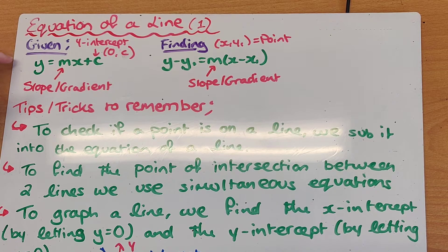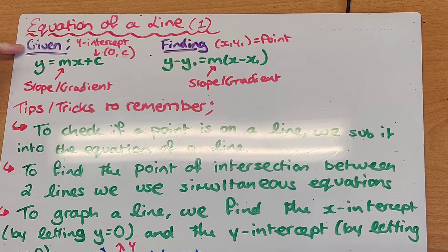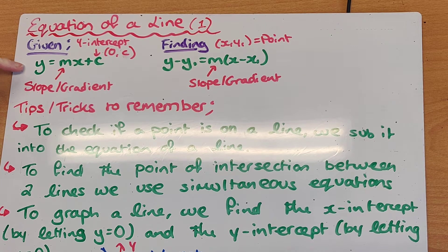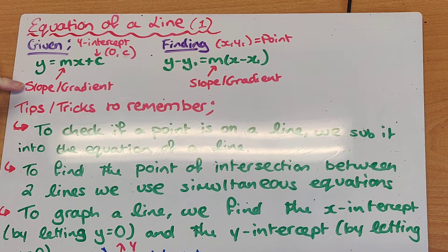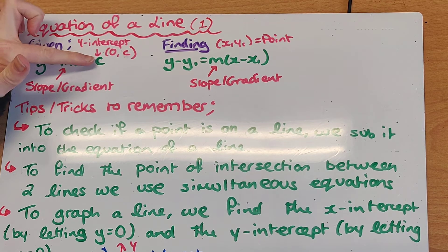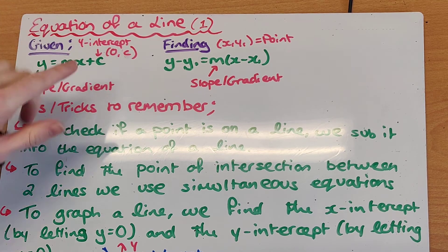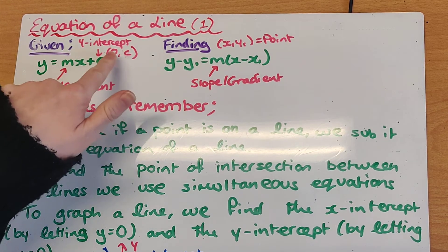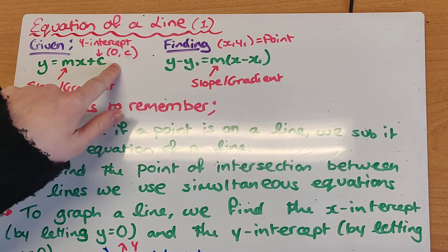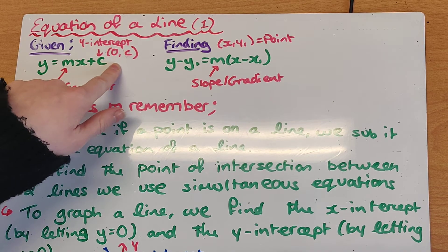The way I like to think of these two formulas is: if you're given the formula for the equation of a line, we tend to use y equals mx plus c, because this allows us to find m, which is the slope — another word for slope is gradient — and the y-intercept c. The y-intercept, remember, is the point where the line crosses the y-axis, which we usually write as (0, c), because our x-coordinate would be 0 on the y-axis.